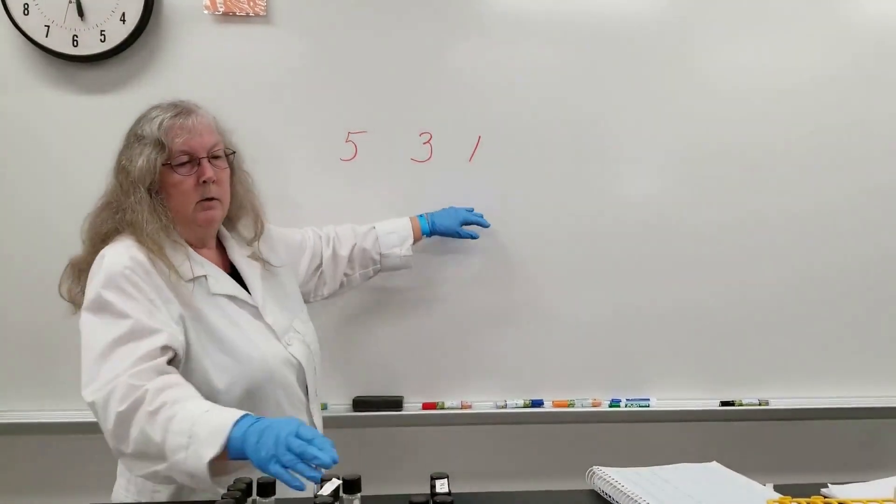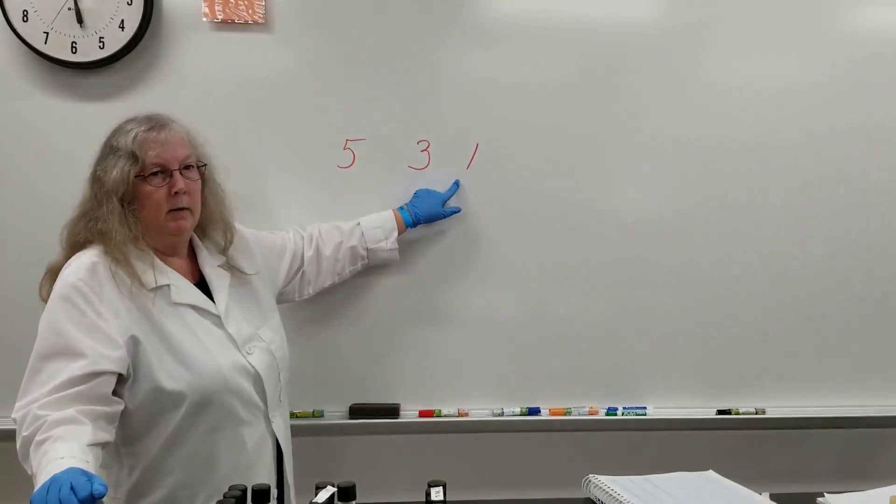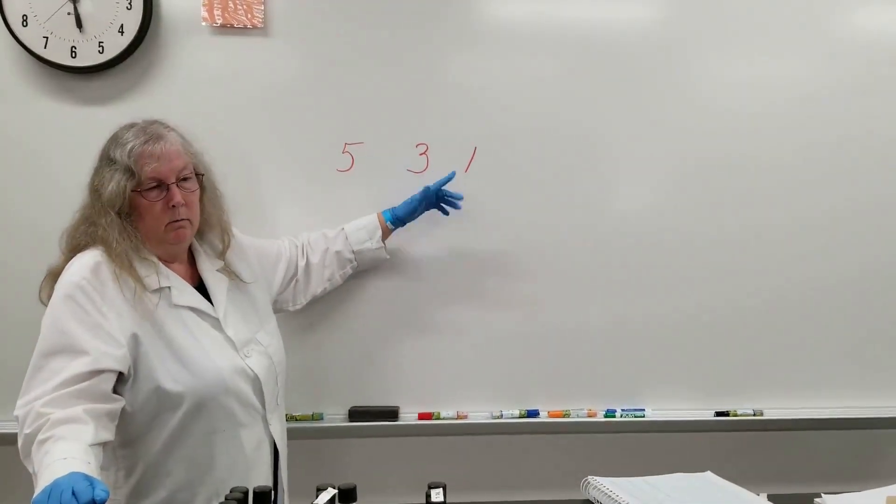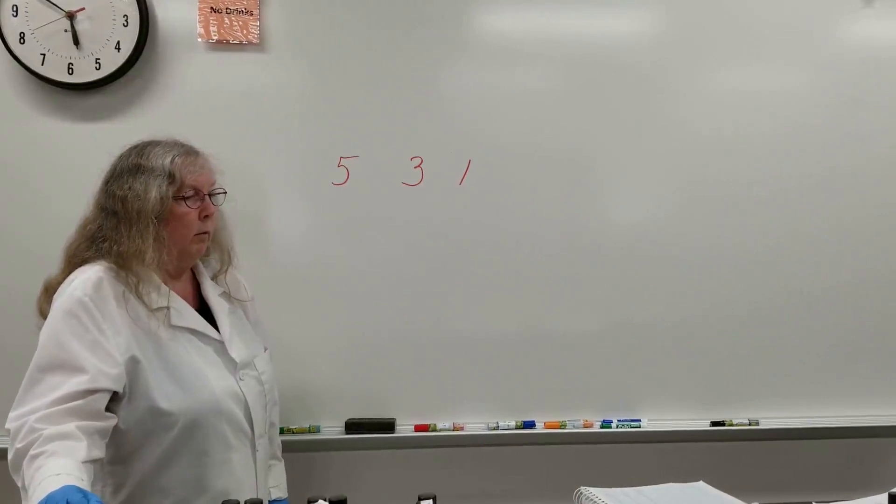And then in the last set with 0.1 mil added, if only one tube was positive, then you'd record the number one. So, you'd record it as five, three, one.